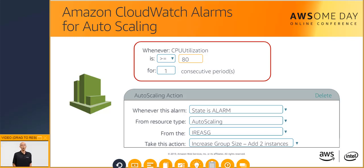When you add more instances, the CPU utilization should go down. You should set another CloudWatch alarm to define a threshold for when instances should be terminated from the auto-scaling group. For example, as CPU utilization goes below 20% for more than 5 consecutive minutes, terminate one instance. The beauty of it all is that auto-scaling can manage your workload dynamically, so you do not have to focus on it.